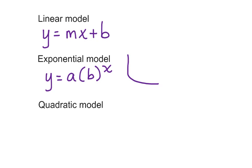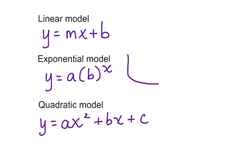A quadratic model has the equation y equals ax squared plus bx plus c. And a quadratic model is going to form a parabola, whether it's an up parabola or a down parabola — it is still representing a quadratic model.